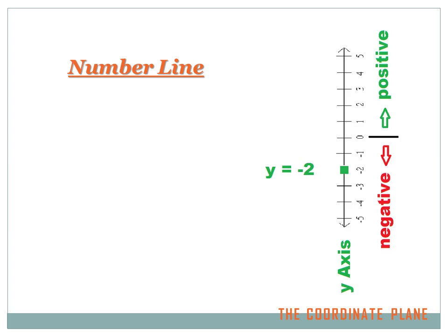But we could turn this axis 90 degrees and get it to run from top to bottom. In this case, the zero's in the middle, the numbers above zero are positive and getting larger as we get further from zero. The numbers below zero are negative and getting smaller as we get further from zero. We could plot a number on this — let's say y equals minus two. That'd be right at the minus two spot. By convention, we call this axis the y-axis, which runs from top to bottom.